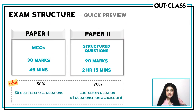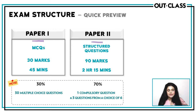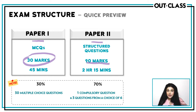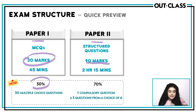We will now go over the exam structure. Your paper comprises of two papers: Paper 1 and Paper 2. Paper 1 will have MCQs — 30 MCQs with 45 minutes to finish. In Paper 2, you will have structured questions comprising 90 marks, with two hours and 15 minutes to finish your exam. Paper 1 comprises 30% of the final grade and 70% is the weightage for Paper 2.